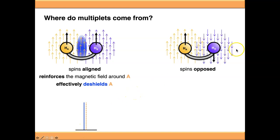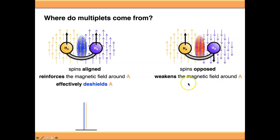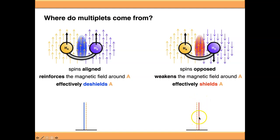Looking at the spins-opposed situation, the magnetic field of B opposes the magnetic field of A. We end up with a region of destructive interference in the middle, weakening the magnetic field around A and effectively shielding it. This moves the signal slightly to the right, slightly to lower ppm.